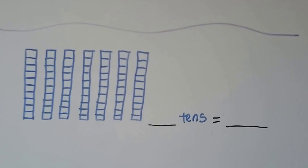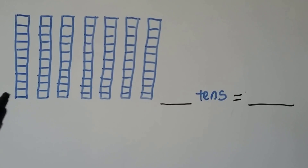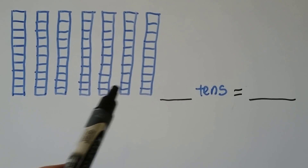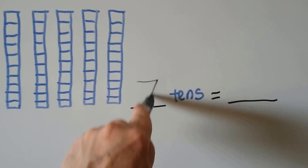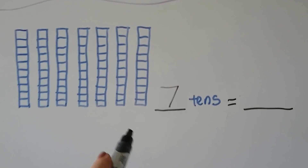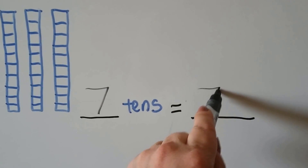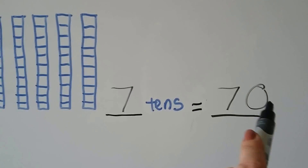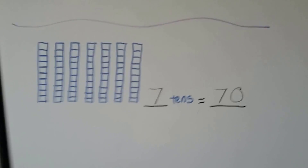How about this one? How many tens do we have? We have one, two, three, four, five, six, seven tens. There's no ones. So it's equal to the number seventy. Seven tens and zero ones.